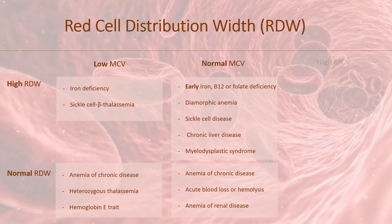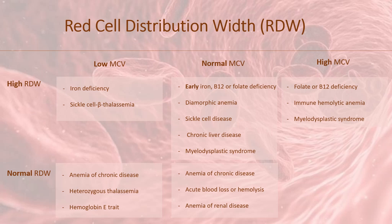High MCV and high RDW are seen with folate or vitamin B12 deficiency, immune hemolytic anemia, and myelodysplastic syndrome. And lastly, high MCV but normal RDW are associated with aplastic anemia, chronic liver disease, chemotherapy, antivirals, and alcohol.